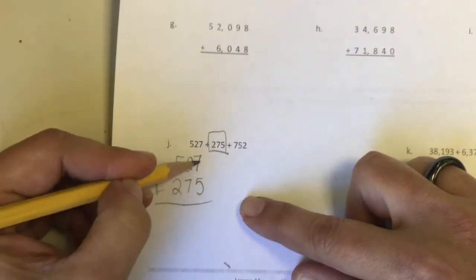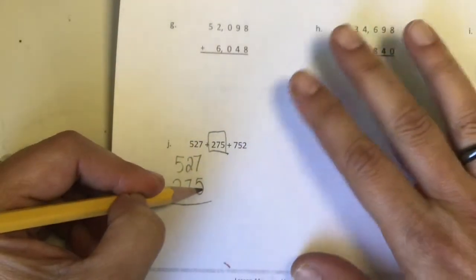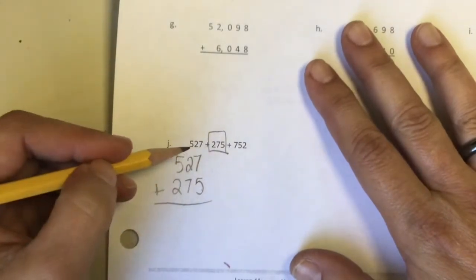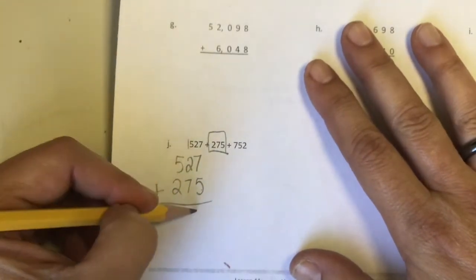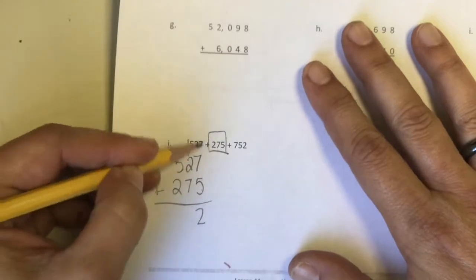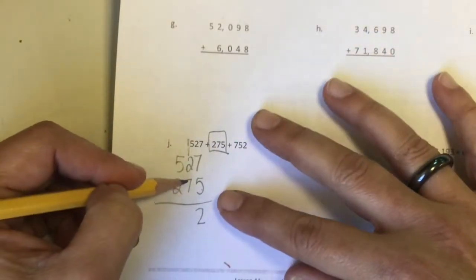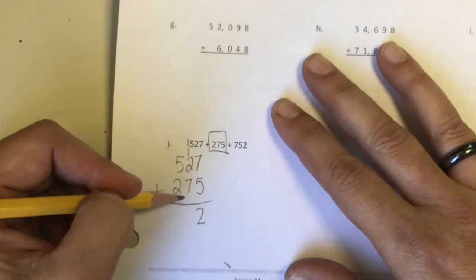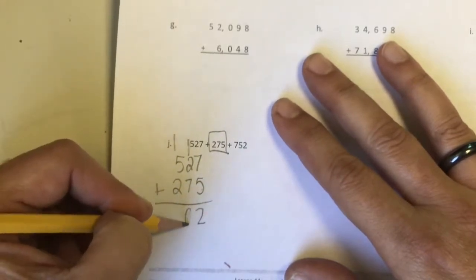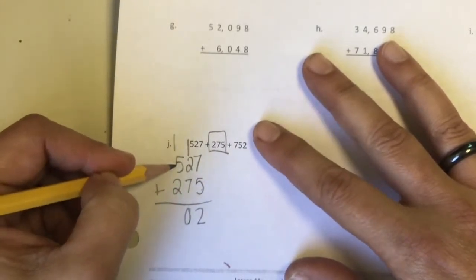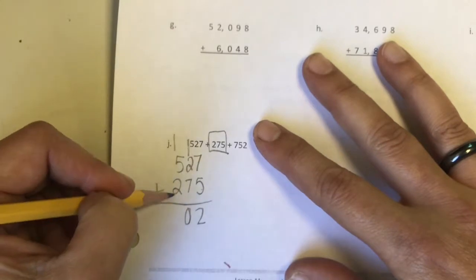Then I'm going to add 7 plus 5 is 12, then I'm going to move to the tens place, 7 plus 2 plus 1, then I'm going to move to the hundreds place, 1 plus 5 plus 2.